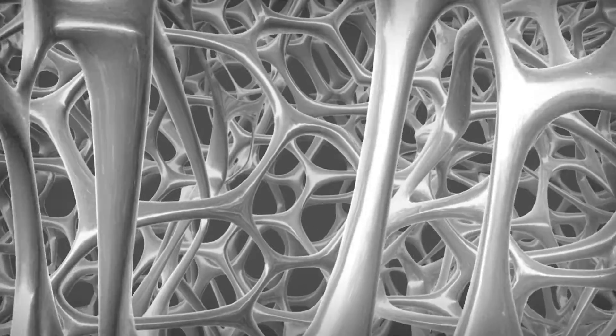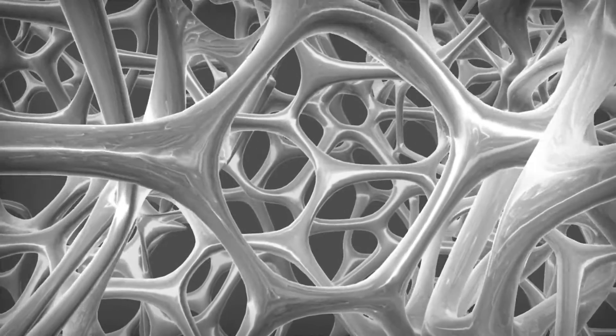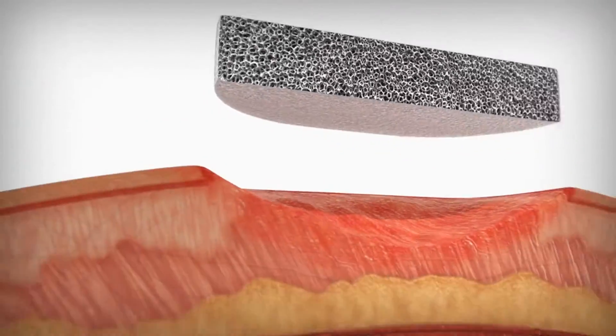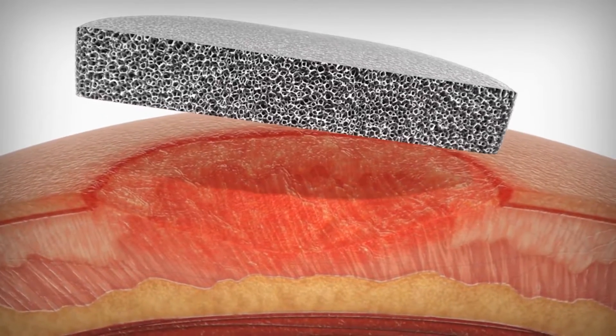This silver coating process maximizes performance while maintaining the reticulated open cell foam structure for even delivery of negative pressure. This is how VAC GranuFoam Silver dressings powered by ecstatic technology work.